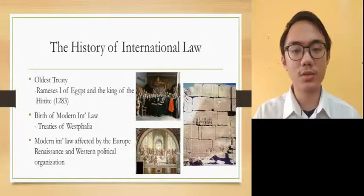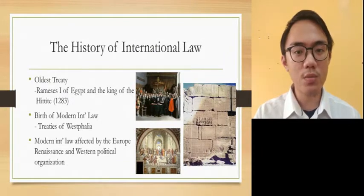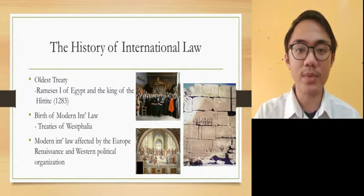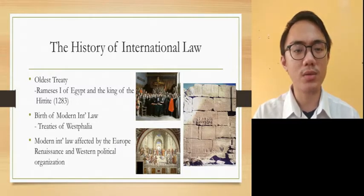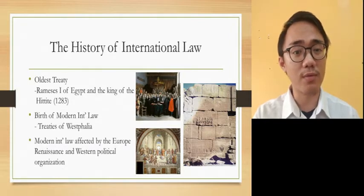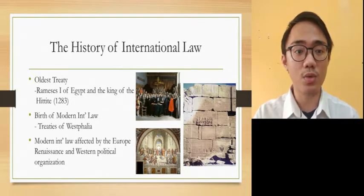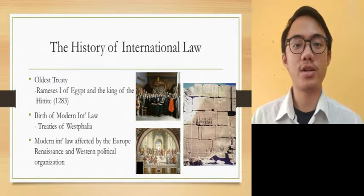Let us move on to the next part, which is the history of International Law. The Altus Treaty was concluded in 1283 before Christ, between Rameses I of Egypt and the King of Hittite. It was for the establishment of eternal peace and brotherhood between the two kingdoms at that time.